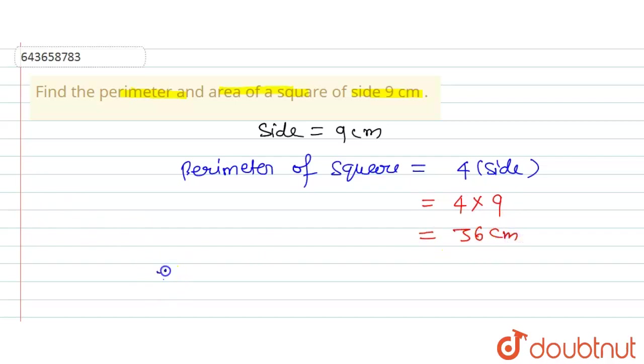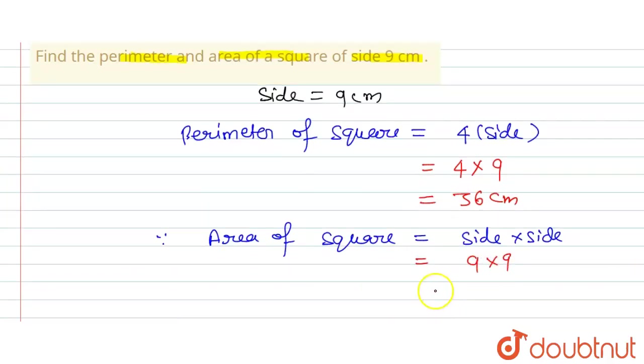And also as we know that area of square can be calculated by side into side. Okay, so here side given as 9, so 9 multiply with 9, so this is equal to 81 centimeter square. So this is the perimeter of a square and this is the area of a square. So this is the final answer for this question.